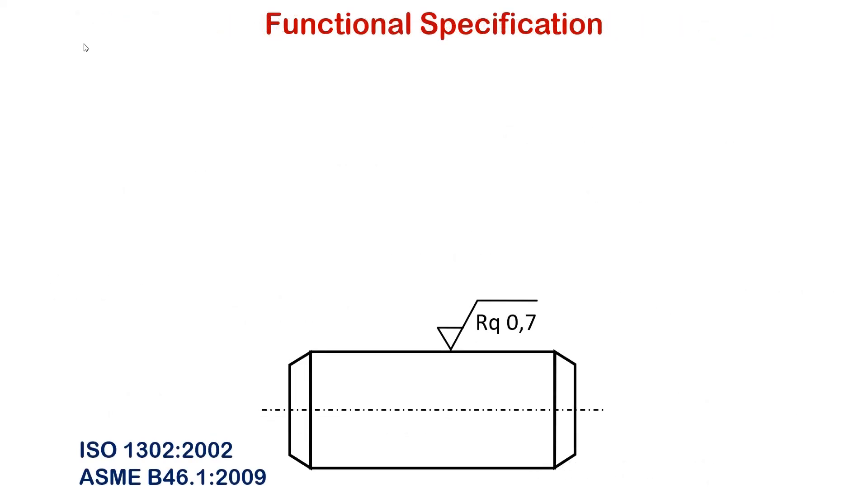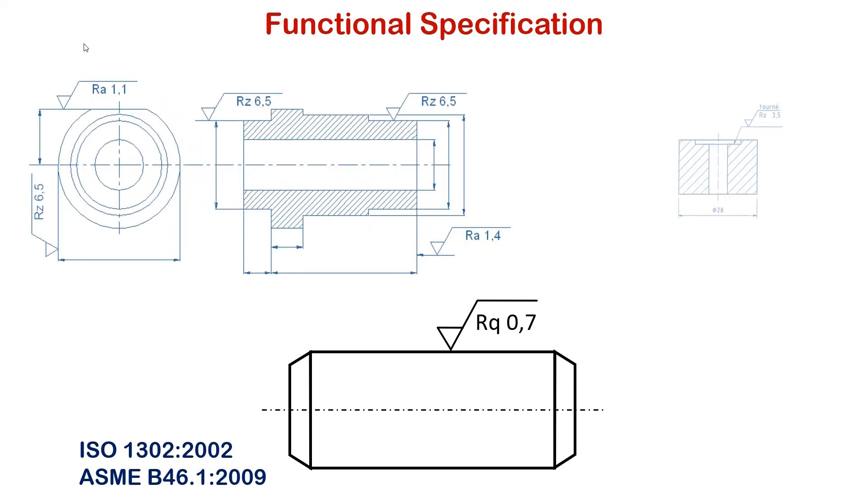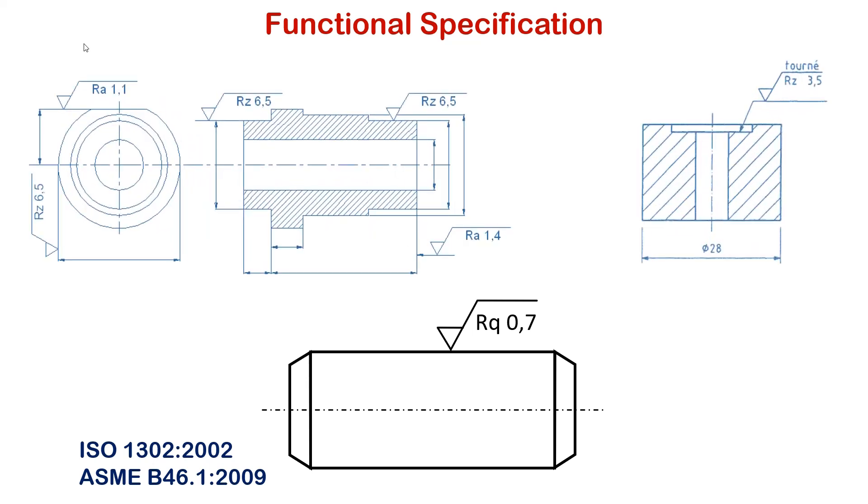Regarding surface texture, the ISO 1302 standard describes a visual specifications language that designers must use on mechanical drawings. An indication of surface texture is done through the root symbol, associated with indications that provide the parameters to be controlled and their limits. Indications of surface texture are part of the tolerancing of a workpiece, as are indications of size and position. This standard will soon be replaced by ISO 21920-1.